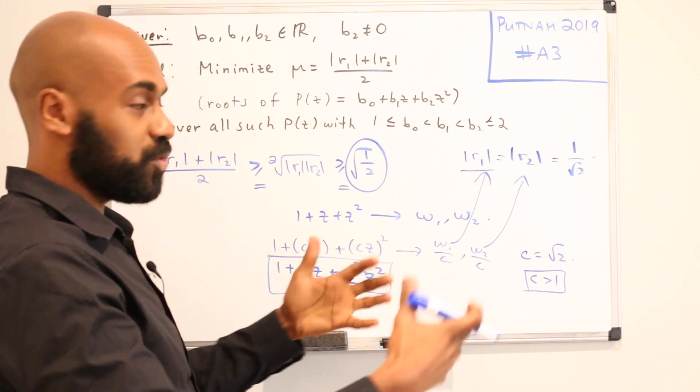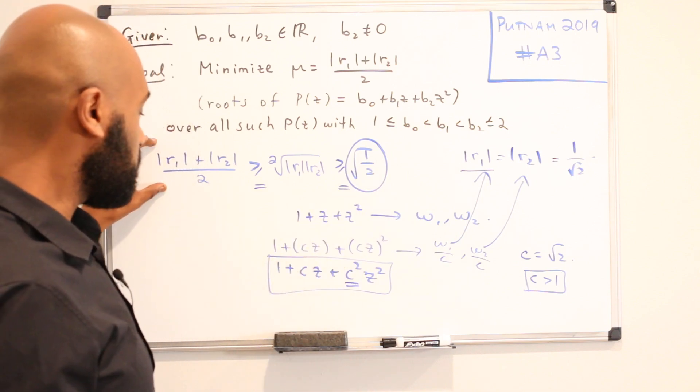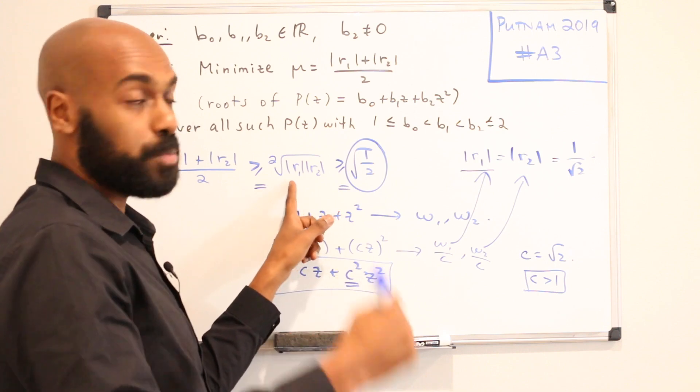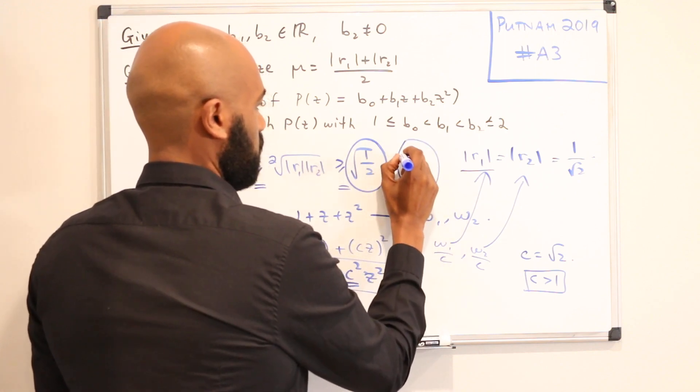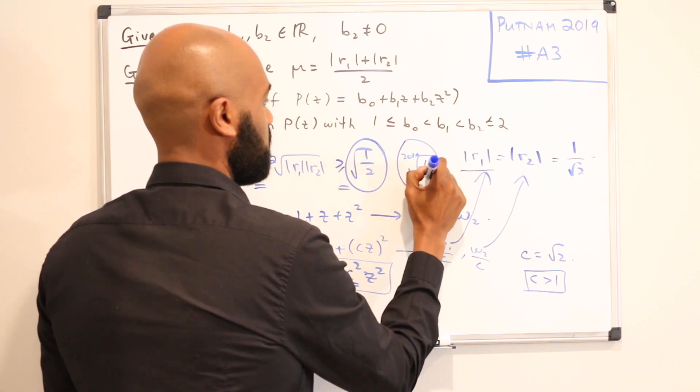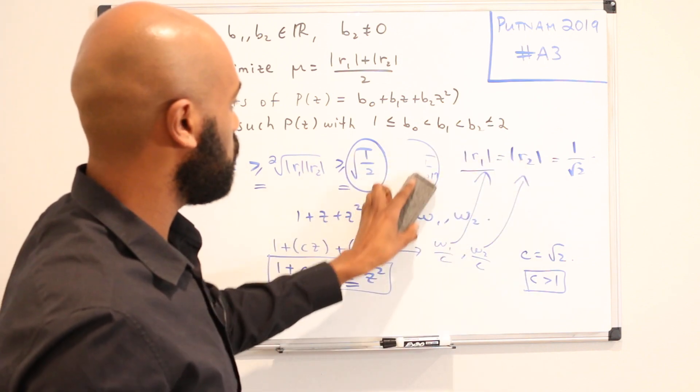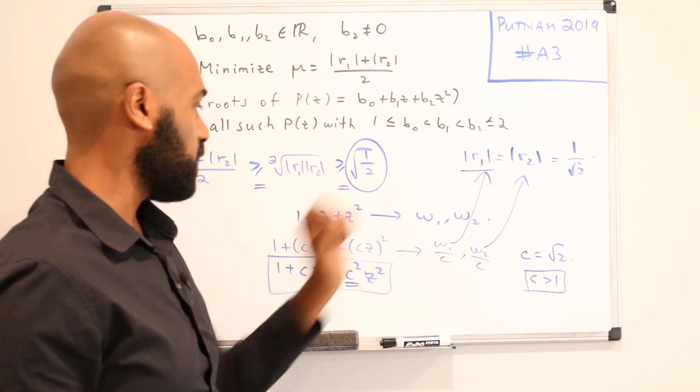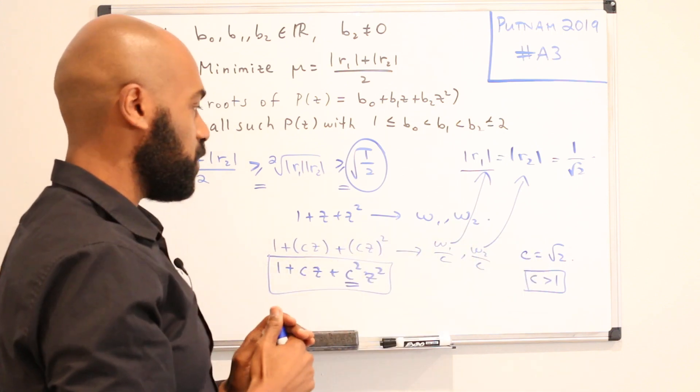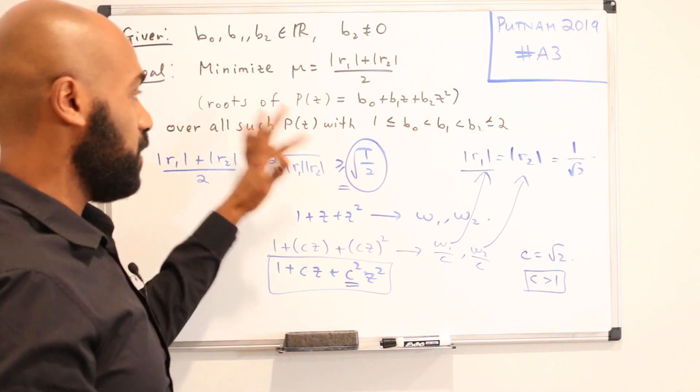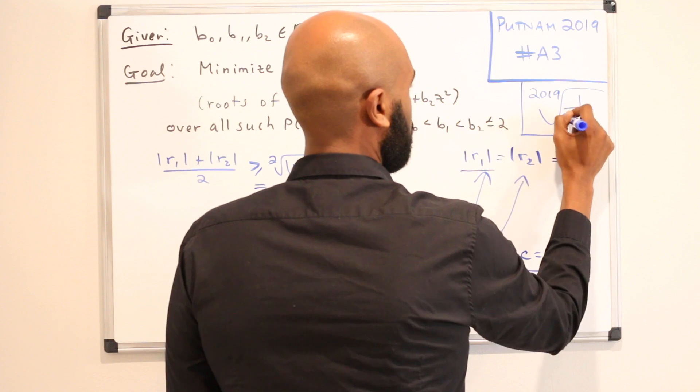How would this generalize to the 2019 case? We'd have a very similar setup, where here we'd have the average of 2019 things, so here we'd have the 2019th root of the product of 2019 things, which is going to be at least the 2019th root of 1 over 2019. And using a similar analysis, making all of the moduli of the roots equal to this 2019th root of 1 over 2019, and constructing the same polynomial that we had here, but extended to a degree 2019 polynomial, we'll get exactly the same phenomenon that we had here. So it gives us a minimum of the 2019th root of 1 over 2019.